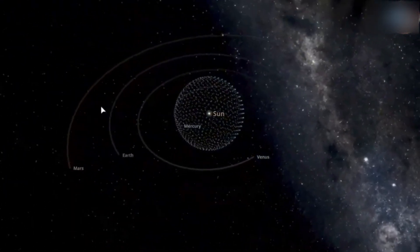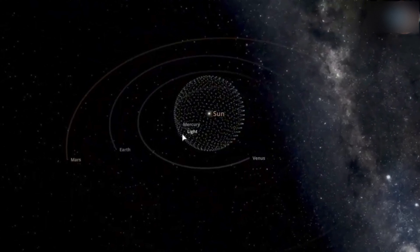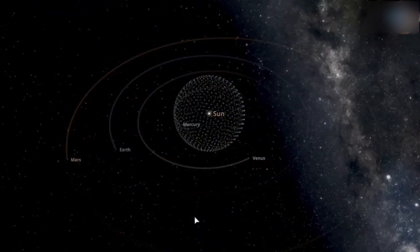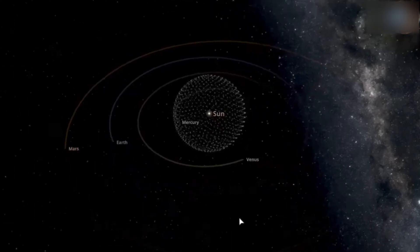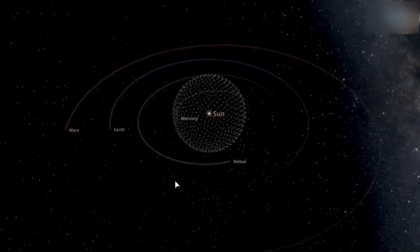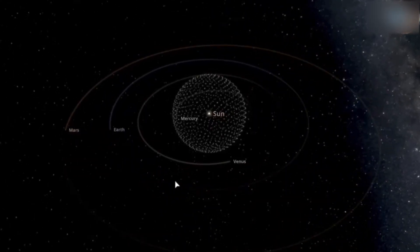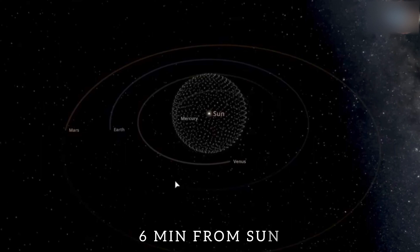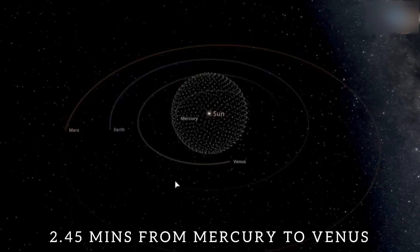As you can see, light has already reached Mercury now. It took it 3 minutes and 13 seconds. Now it will proceed to its next destination, which is Venus. It takes light to reach Venus in approximately 6 minutes from Sun, and from Mercury to Venus in almost 2 minutes, 45 seconds.